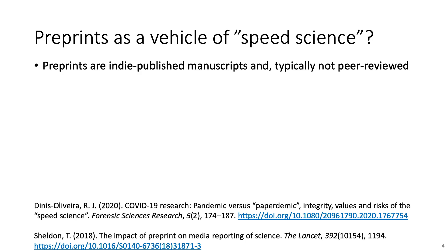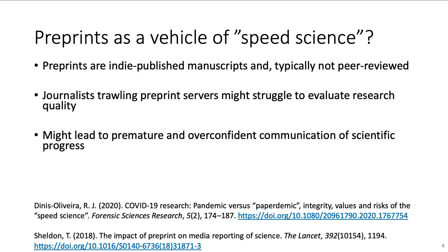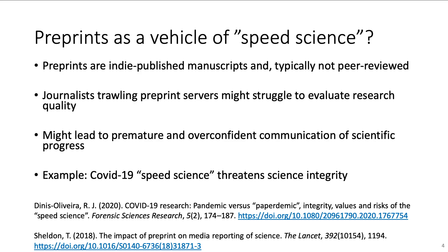However, journalists are also trawling preprint servers searching for the most recent developments. Journalists without sufficient scientific education might struggle to evaluate the quality of preprints. This could, and in some cases has, led to the premature and overconfident communication of results. For example, the contemporary COVID-19 pandemic has led to a surge of published research and preprints, of which many do not live up to the necessary standards. This so-called speed science is a threat to evidence-based progress as well as scientific integrity in the public reception.